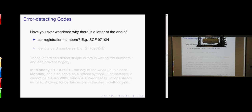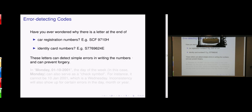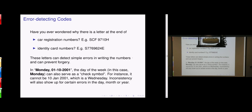Have you ever wondered why there's a letter at the end of many identification numbers — like coupon numbers or IC numbers? These extra letters can detect simple errors in writing the numbers and can prevent forgery. The idea is to code information with some redundancy. By adding a little bit more extra information, we can detect some errors or ambiguity.